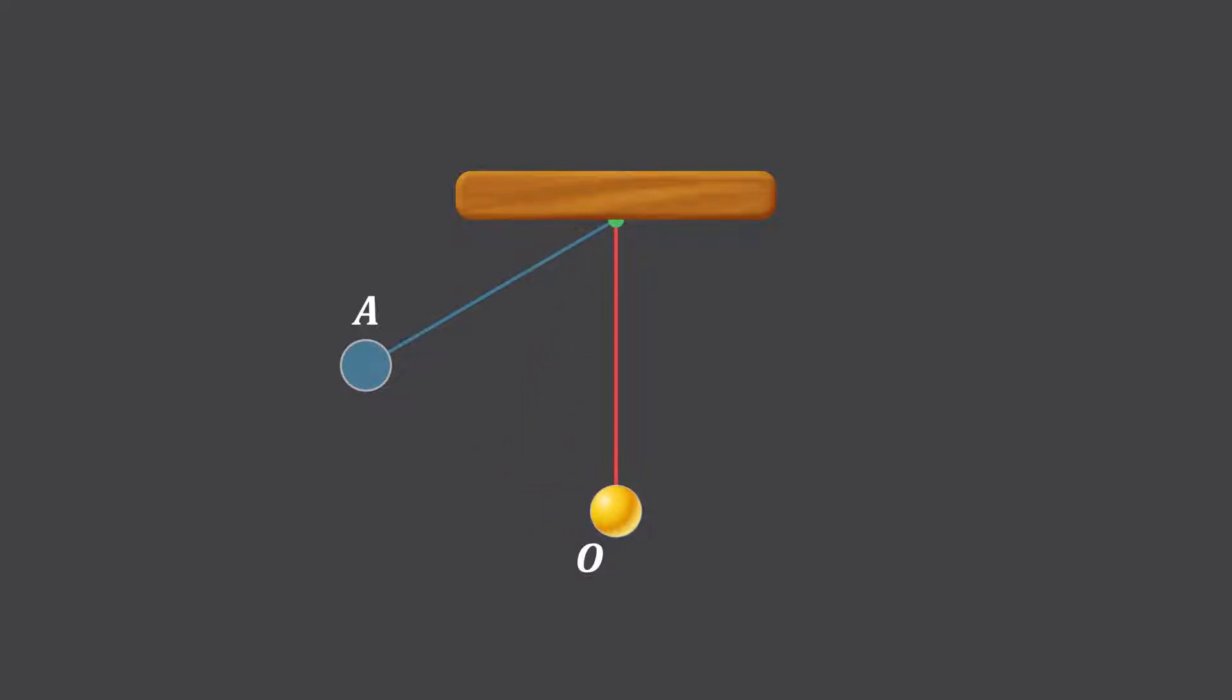At the mean position, the net force on the bob is again zero. But the inertia of the bob makes it move until it reaches the other extreme position B. As the bob moves towards point B, it again starts to experience a pulling force towards the mean position. This pulling force slows the movement of the bob until it stops moving at point B.